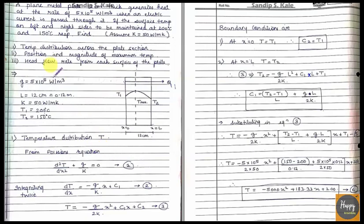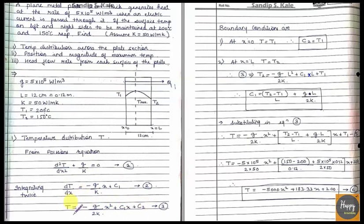This is the Poisson's equation. Our first task is to find the temperature distribution — that is the T equation. The Poisson's equation is: d²T/dx² + g/k = 0 — name this equation 1. Integrating equation 1 gives equation 2: dT/dx = −(g/k)x + C1. Integrating again gives equation 3: T = −(g/2k)x² + C1·x + C2.